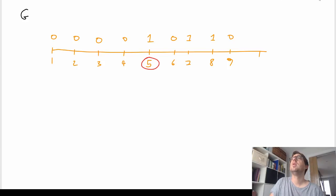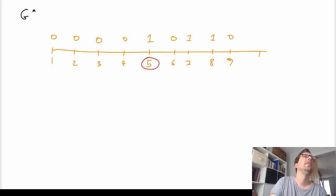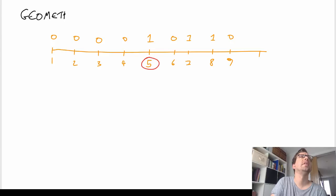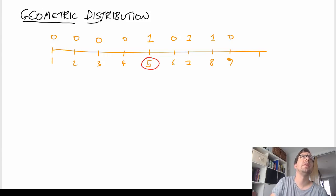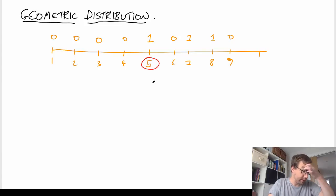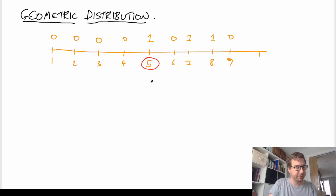This is what we call a geometric random variable. So this 5 being the first time that we saw a success gives us a geometric random variable, or a geometric distribution. There are other ways that geometric distributions can crop up; this is probably the most straightforward. Geometric distribution arises when we keep repeating an experiment until the success occurs.